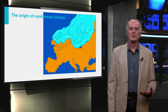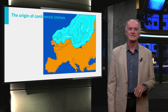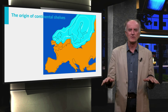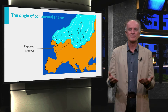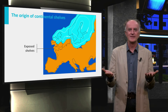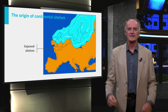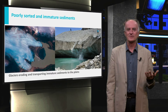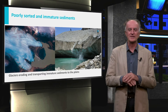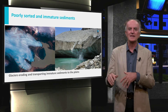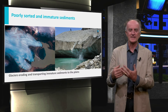This is what Europe looked like something like 15,000 years ago. Large glaciers and, as a consequence of the low sea level, large domains which are presently underwater were emerged — these are the future continental shelves. At high latitudes, glaciers were present, eroding and transporting towards the plains all sorts of sediments, typically poorly sorted and immature.